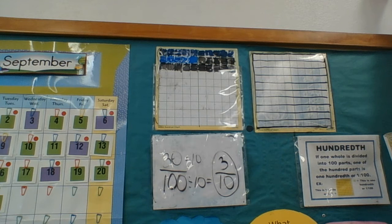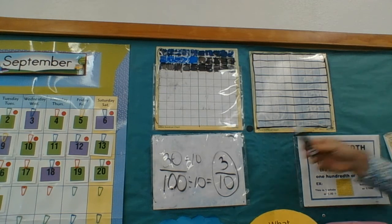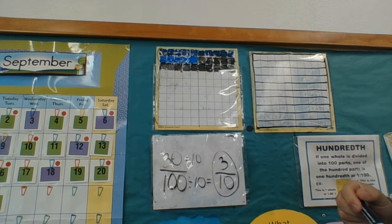On your SBAC test, they might have as an answer where you came up with decimal 0.30. They may have as an answer decimal 0.3. And because of this lesson, you will now know why.